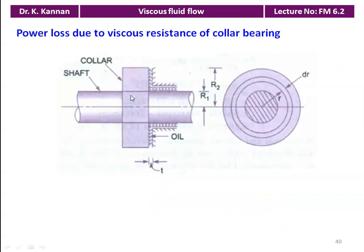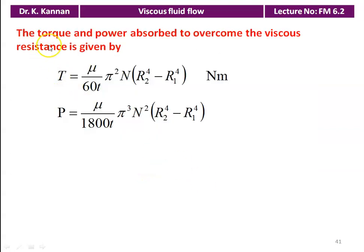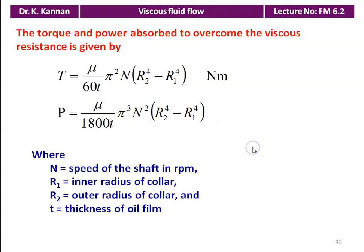For power loss due to viscous resistance in a collar bearing: the collar bearing has a collar fitted to the shaft with an oil film between the rotating collar and the stationary element, with inner radius R₁ and outer radius R₂. The torque is T = (μ/16t)·π²N·(R₂⁴ − R₁⁴) Newton-metres. The power is P = (μ/1800t)·π³N²·(R₂⁴ − R₁⁴) watts, where R₁ is the inner radius of the collar, R₂ is the outer radius, and t is the oil film thickness.